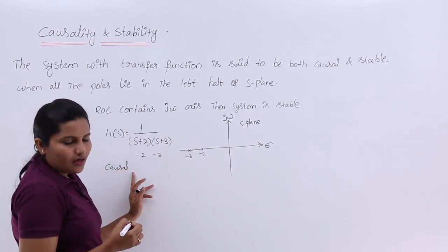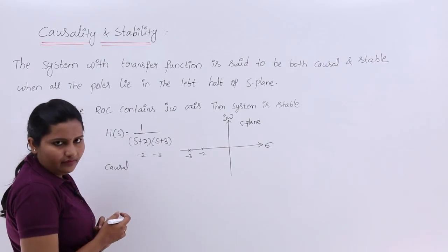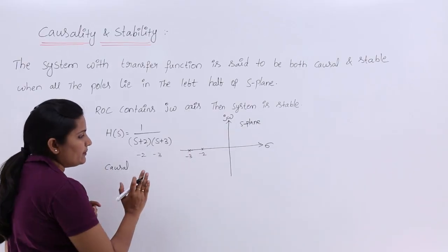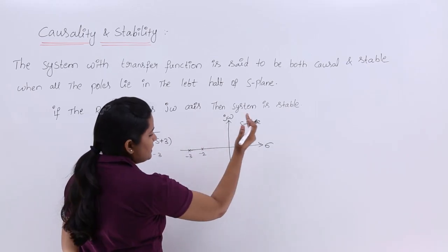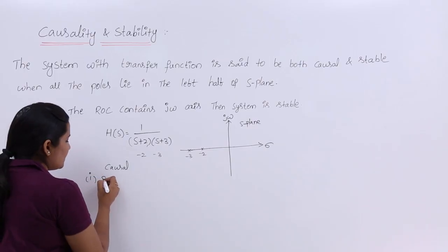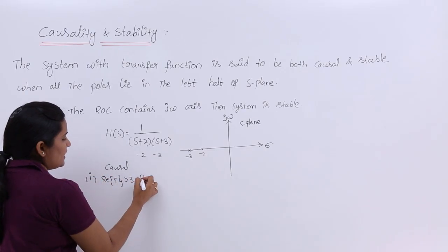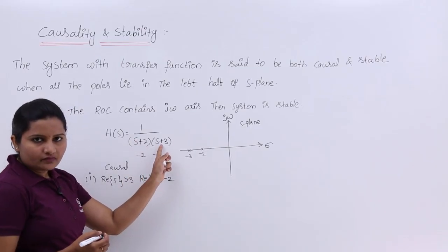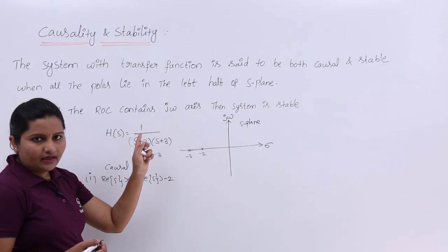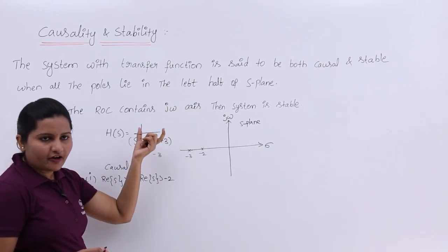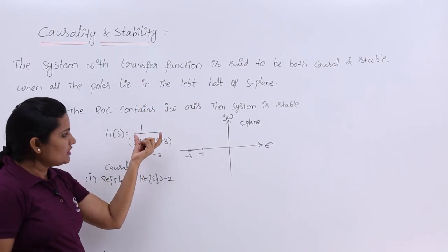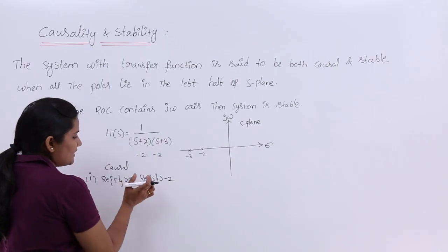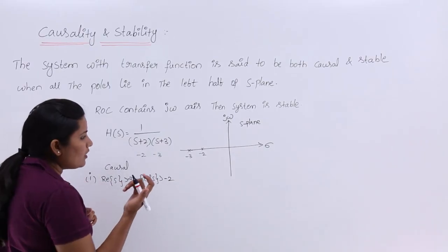This system is causal, but we have conditions to check. In the ROC of this system, the conditions are Re(S) > -3 and Re(S) > -2. This means the transfer function came from a time-domain expression like e^(-at)u(t) + e^(-bt)u(t), where u(t) is included, producing a right-sided ROC of the form Re(S) greater than a value.